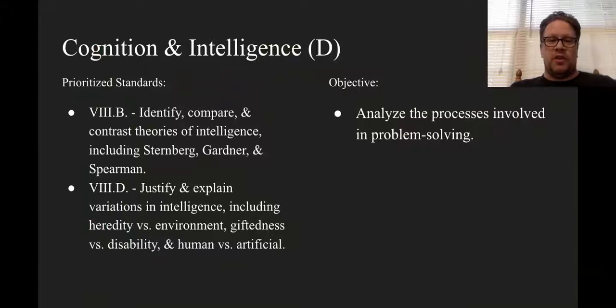All right, that concluded the Cognition and Intelligence Section D lecture. Our prioritized standards, again, were 8B and D. And objectively, now you can analyze the processes involved in problem solving.